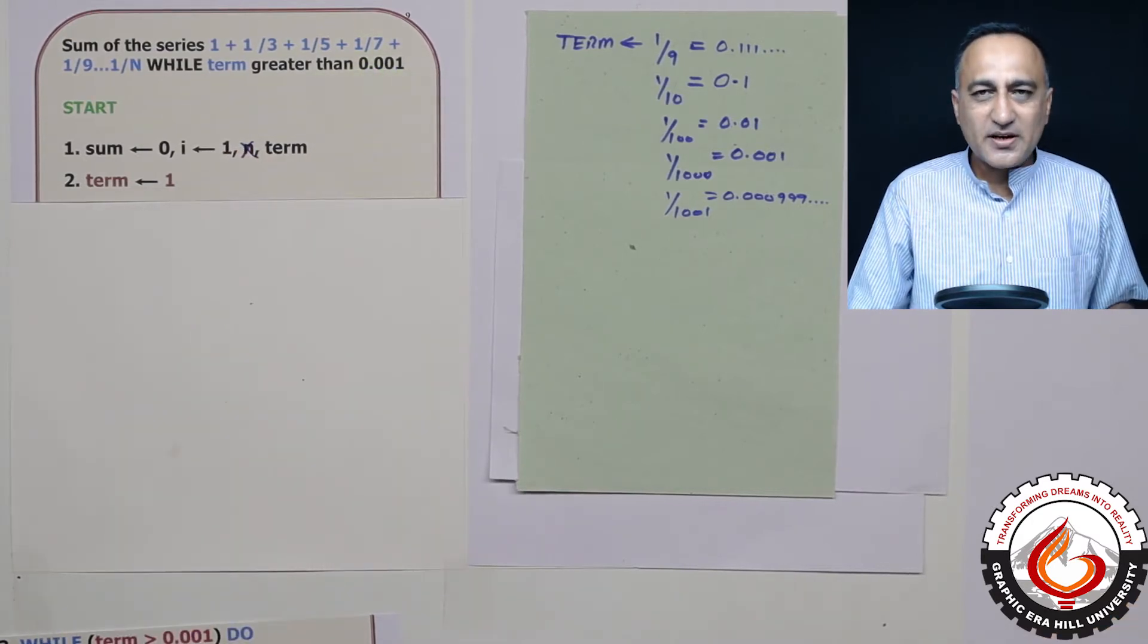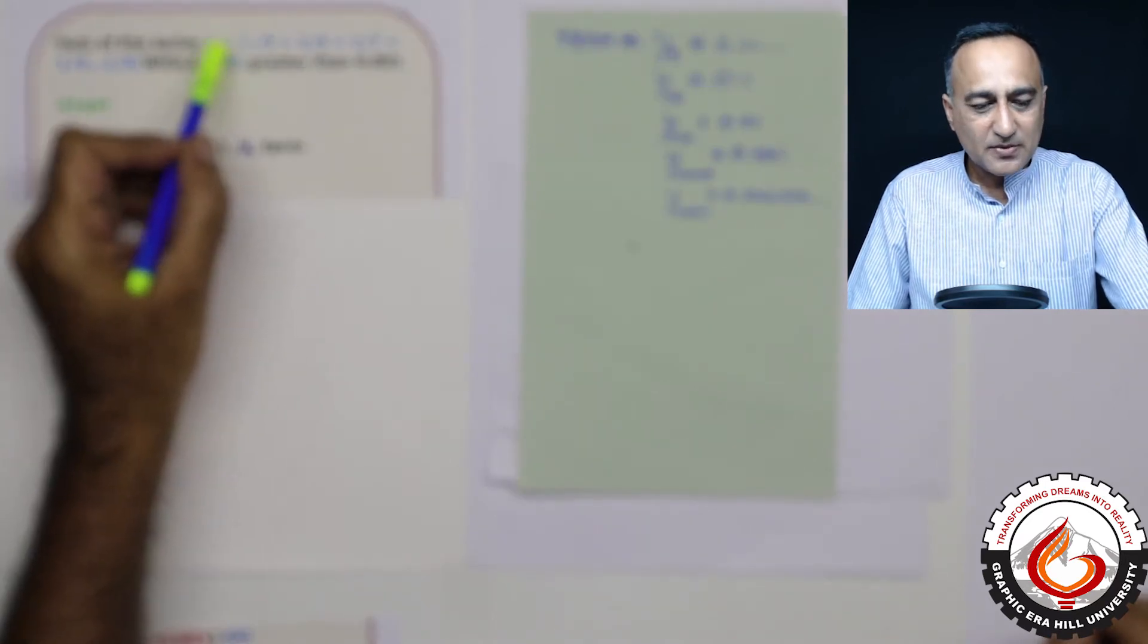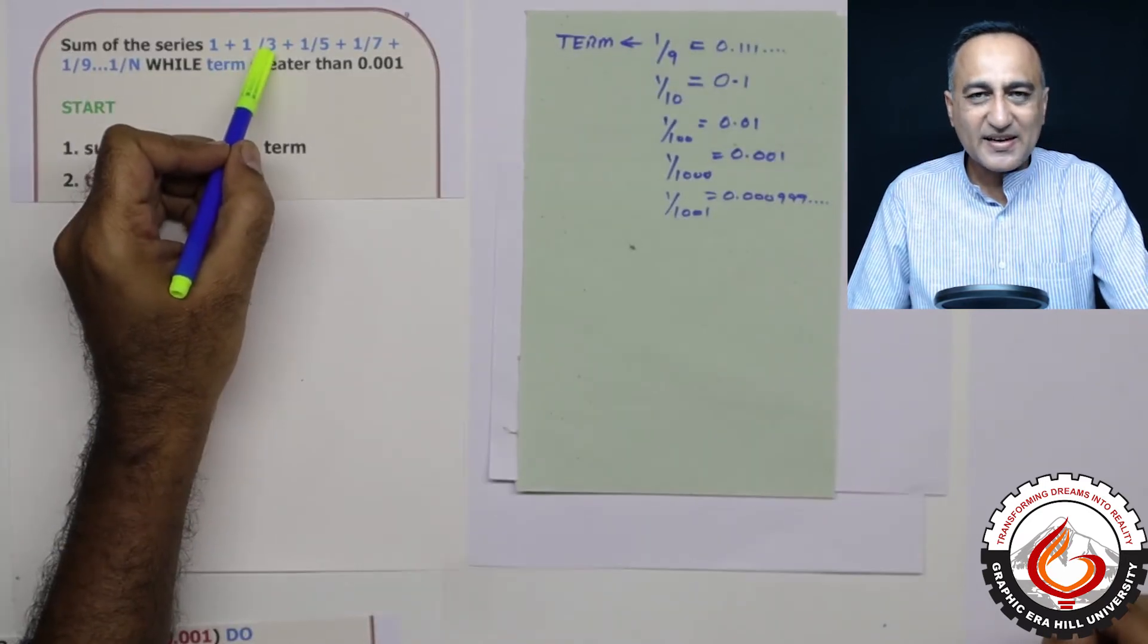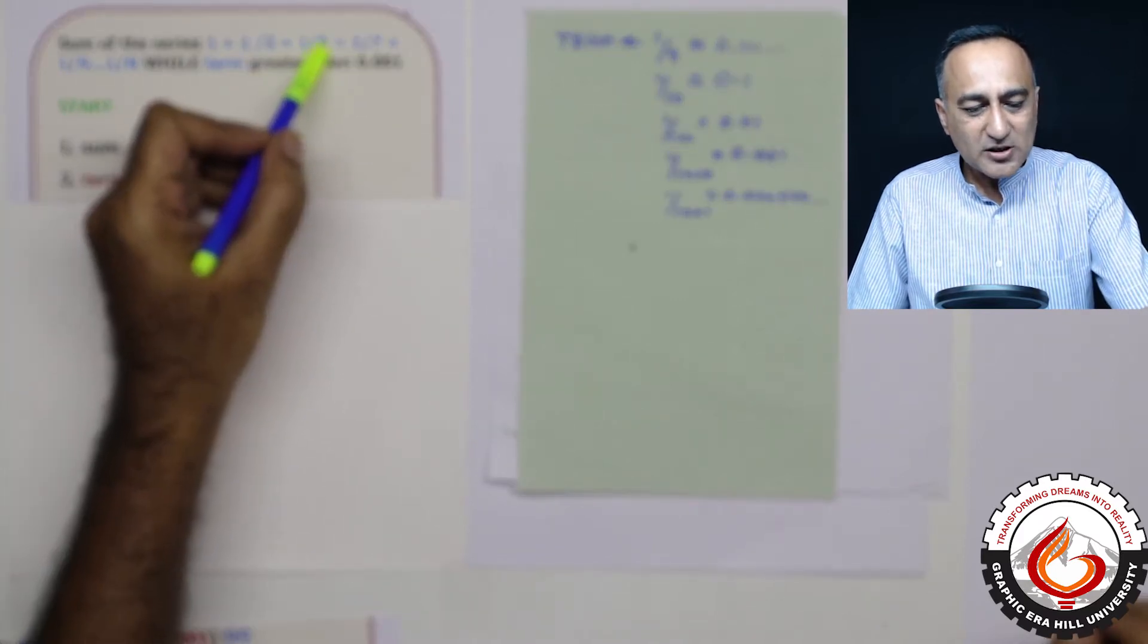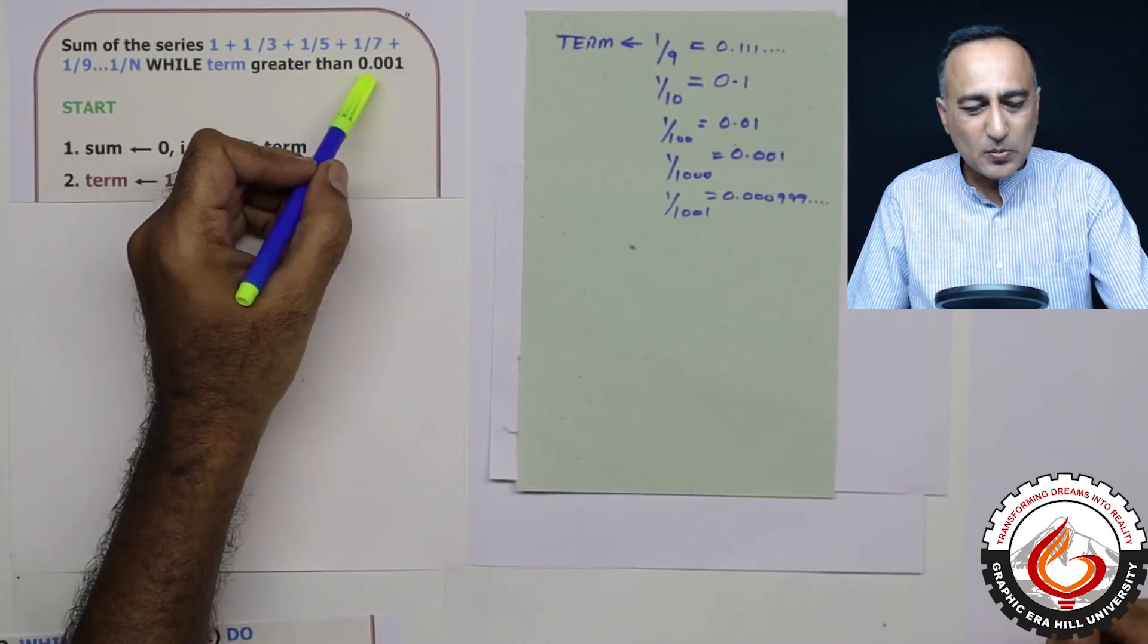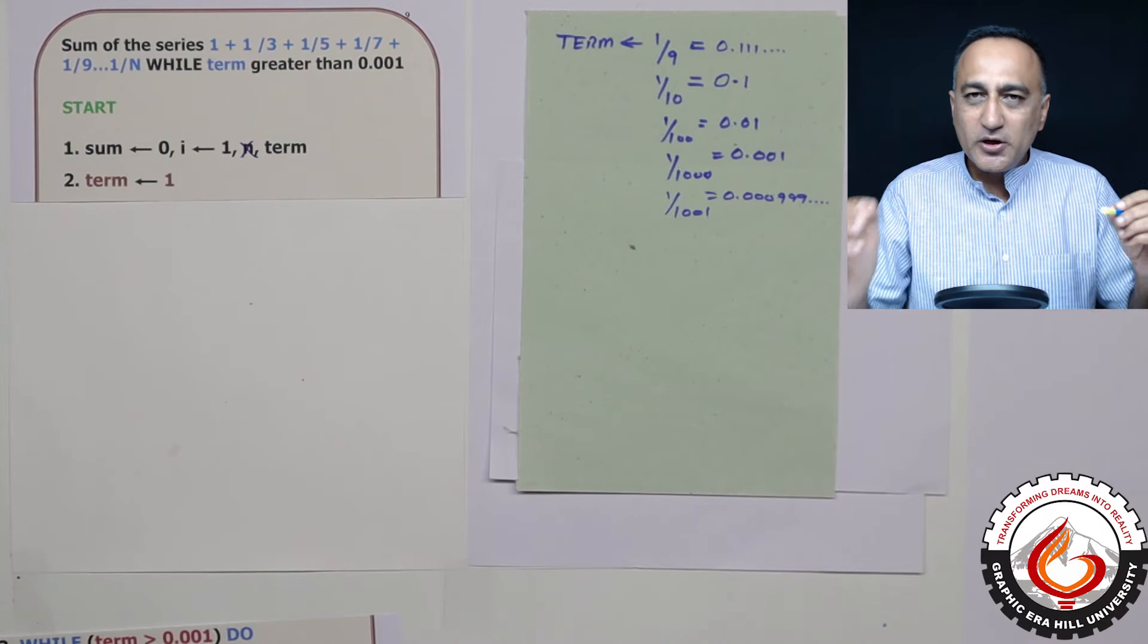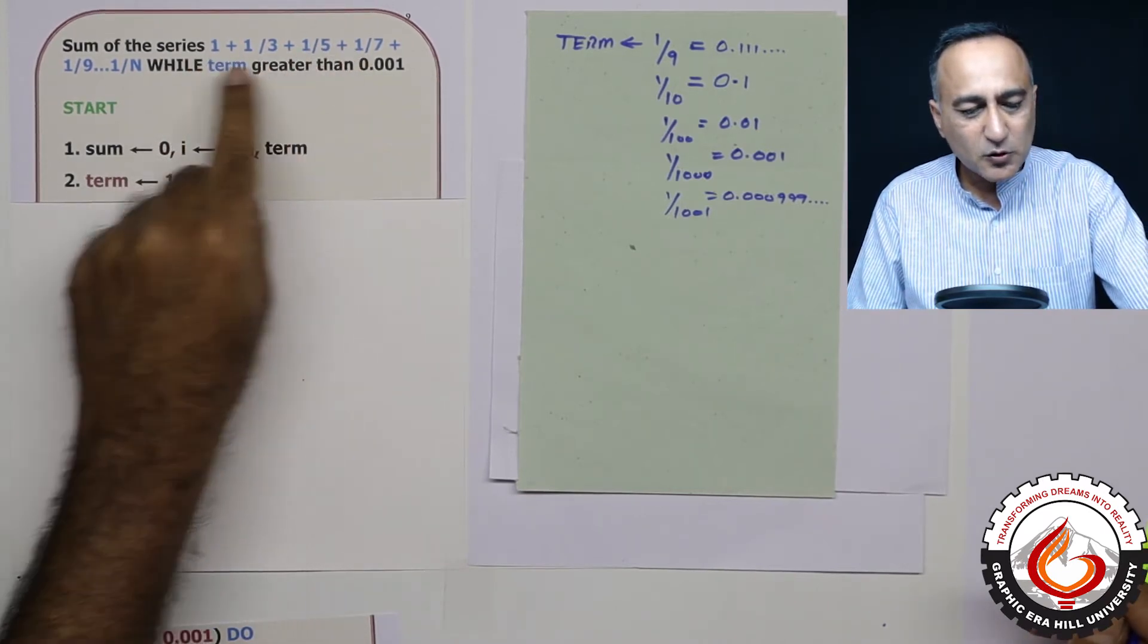So first you need to understand what is a term. 1 upon 1 is the first term, 1 upon 3 is the second term, 1 upon 5 is the third term. So as long as the value of this particular term is greater than 0.001, you need to continue to add the value of this term to the sum.